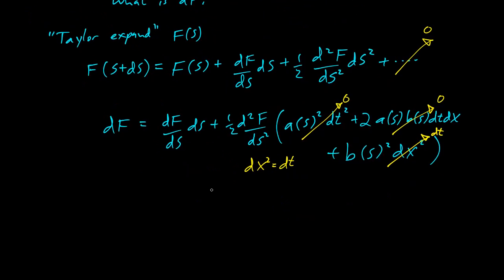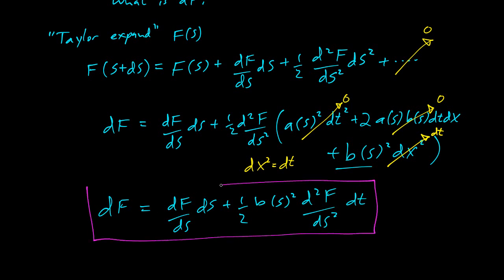What are we left with? Now we're left with df equals df/ds ds plus half, we're just left with the b squared term here, so b(s) squared second derivative ds² dt. This is the generalized version of Ito's Lemma here. Pretty neat.